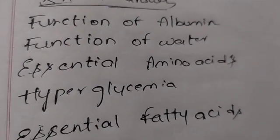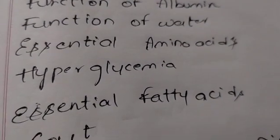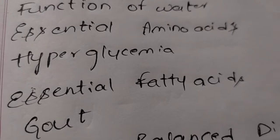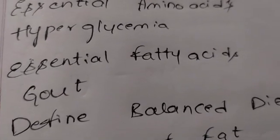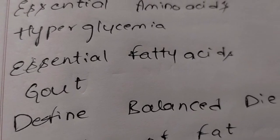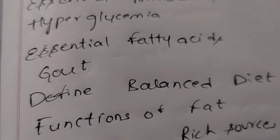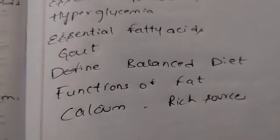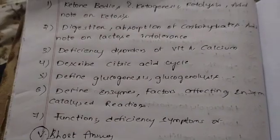Write small notes on vitamin A and dietary fiber - very important. For short answers, choose: functions of albumin, functions of water, essential amino acids and essential fatty acids, hyperglycemia, gout. Define balanced diet, functions of fat, calcium resources. Balanced diet and BMR are important.